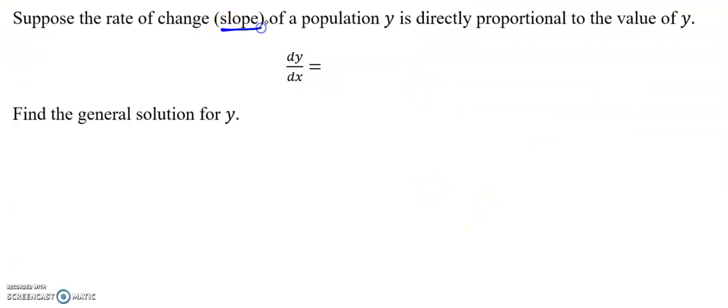All right. Suppose the rate of change of a population y is directly proportional to the value of y. So I'm going to first thing, I'm going to have you change this to a dt. So what this is saying is the change in the population over the change in time. Well, that's supposed to be directly proportional, which means that we're going to have some k value, some multiple every single time in respect to y. Because the rate of change of the population is directly proportional to the value itself.